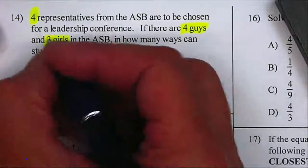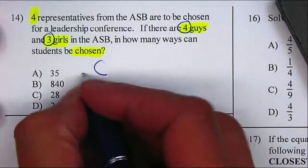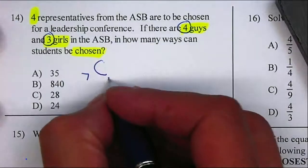How many people are available? Seven. And how many are we selecting? Four.